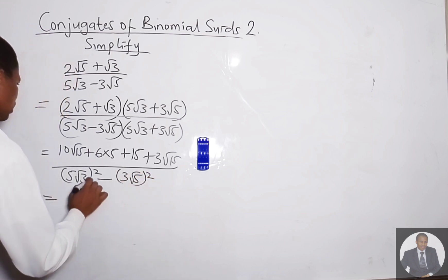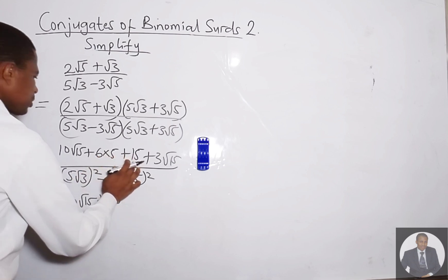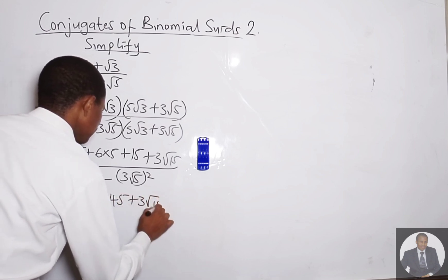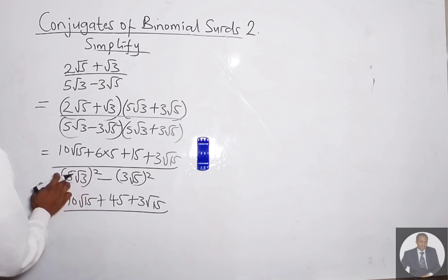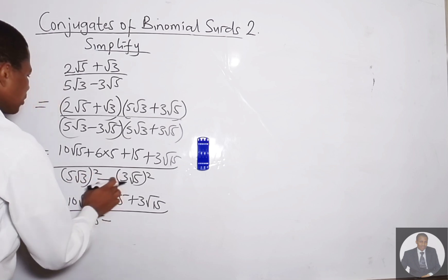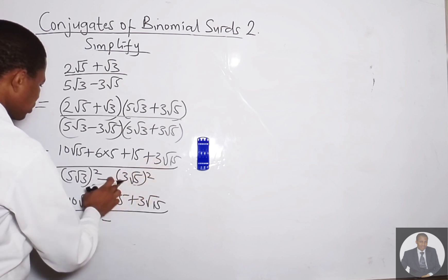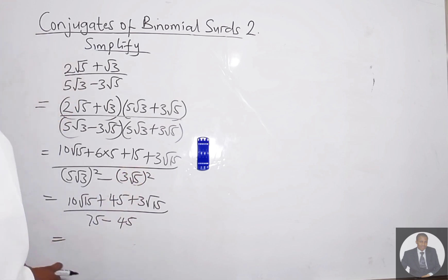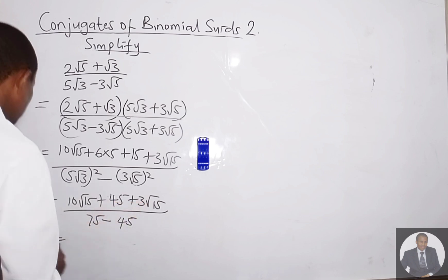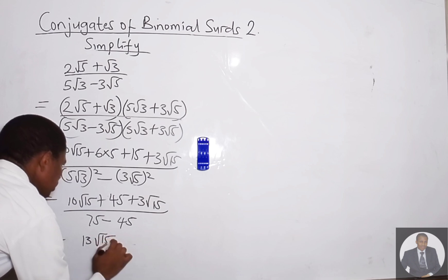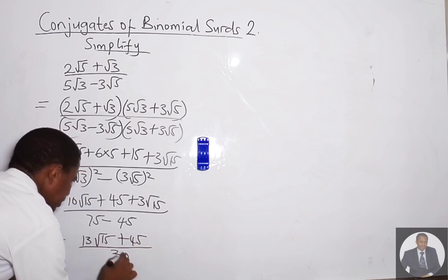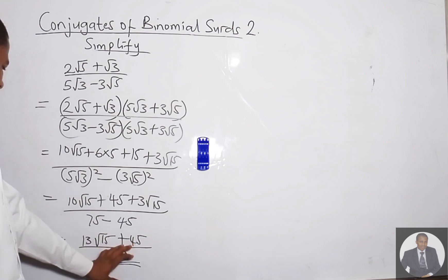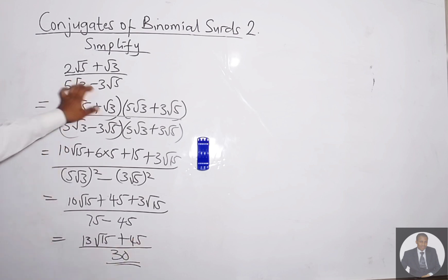So we have 10√15 + 30 + 15 + 3√15. That's 10√15 + 3√15 = 13√15, and 30 + 15 = 45. The denominator: (5√3)² = 25×3 = 75, and (3√5)² = 9×5 = 45. So 75 − 45 = 30. Final answer: (13√15 + 45) all over 30.